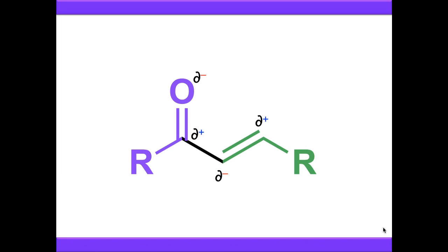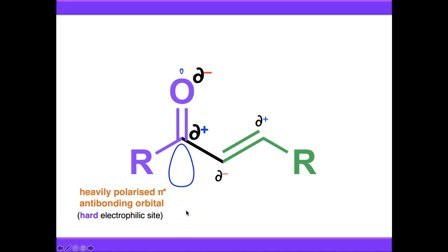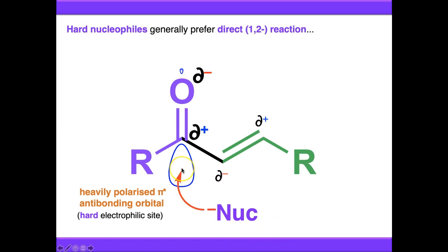Going back to our alpha-beta unsaturated carbonyl compound with its dipole moments, the carbon-oxygen double bond has a pi-star antibonding orbital that is heavily polarised due to the electronegativity of oxygen. This makes the carbonyl carbon the hard electrophilic site — it is highly polarised. A hard nucleophile will therefore prefer to attack this hard electrophilic site. Things like organolithiums and Grignard reagents tend to give 1,2 reaction for this reason.